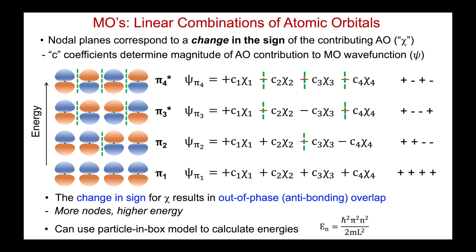To actually specifically calculate the magnitude of the energies — something you would have seen in Chem 101 — it's possible to use the particle-in-a-box model to calculate how the energy increases with the number of antinodal planes. We won't get into that here.